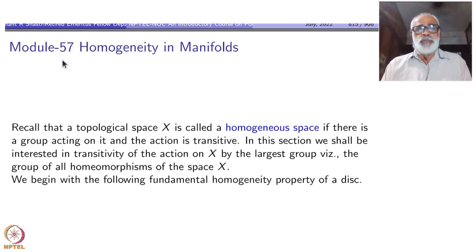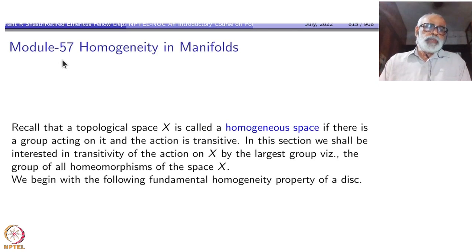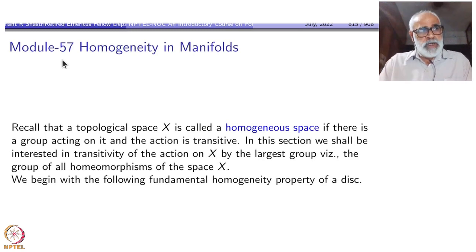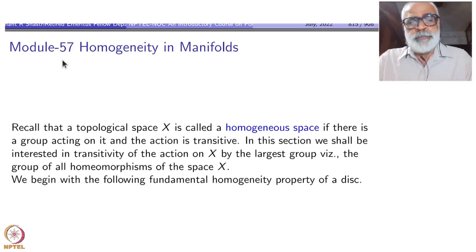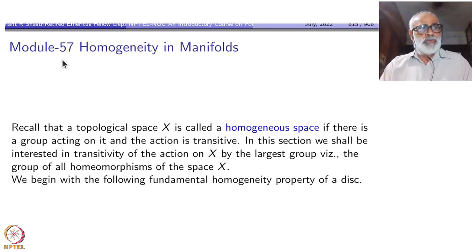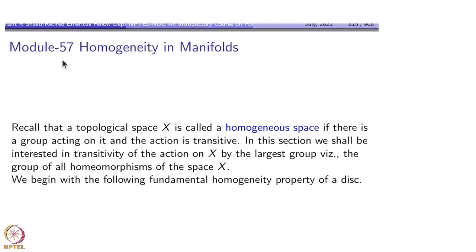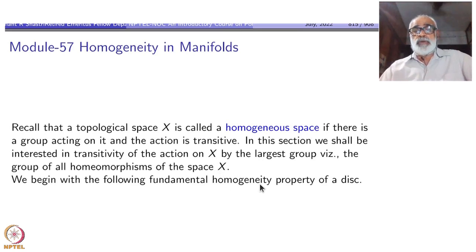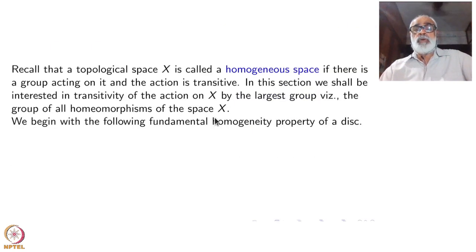In a topological space, when you take a group action, you want each multiplication by g to be a homeomorphism — continuous and automatically a homeomorphism. So the best thing is to take the group of all homeomorphisms, which forms a group under composition. You can look at that group acting on the space x and ask: is the action transitive? The answer is yes in the case of manifolds.